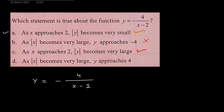And as x becomes very large, infinity, y approaches 4. This is not correct because as x becomes very large, y approaches 0. It does not approach 4. So options a and c are correct.